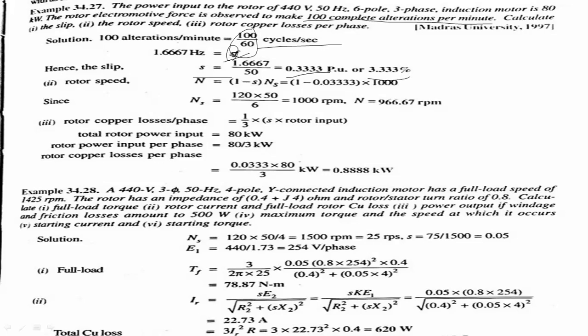So slip = 3.33%. For rotor speed: NS = 120F/P = 120×50/6 = 1000 RPM, then N = NS(1 − S). For rotor copper loss = S × rotor input P2, where P2 = 80 kW. All values should be kept in consistent units (kilowatts or watts throughout).